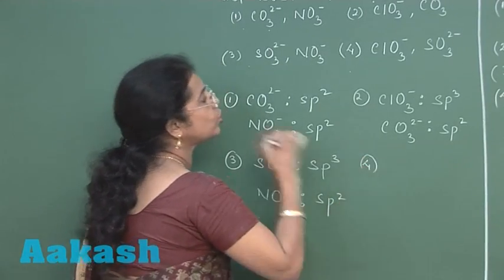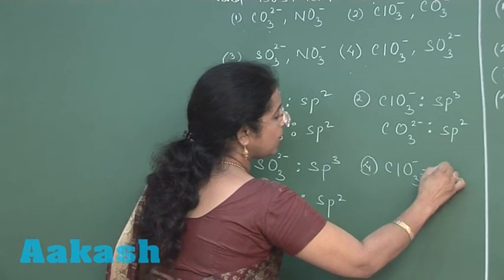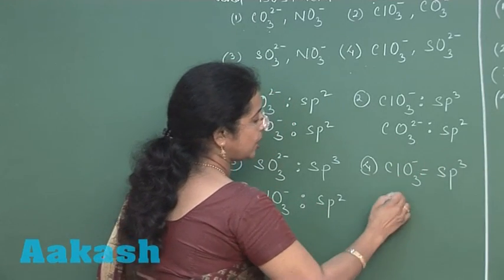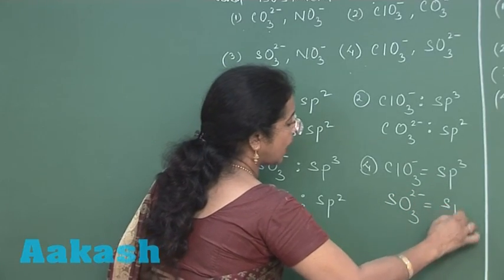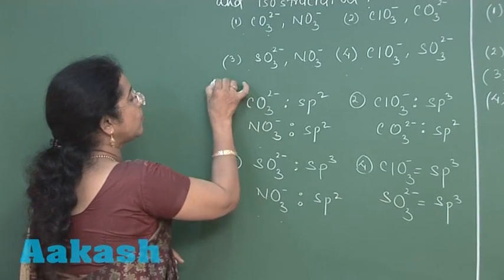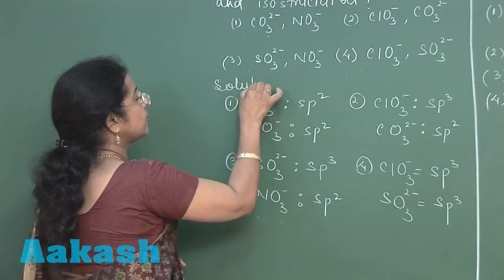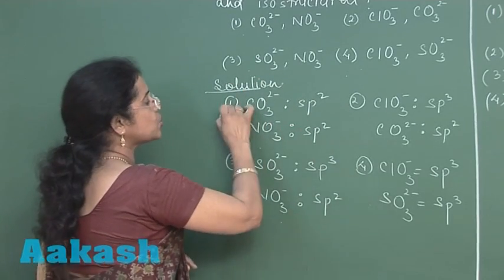In fourth option ClO3 negative is given, hybrid state sp3, SO3 2- negative again hybrid state is sp3. So these two options are isostructural as well as isoelectronic.